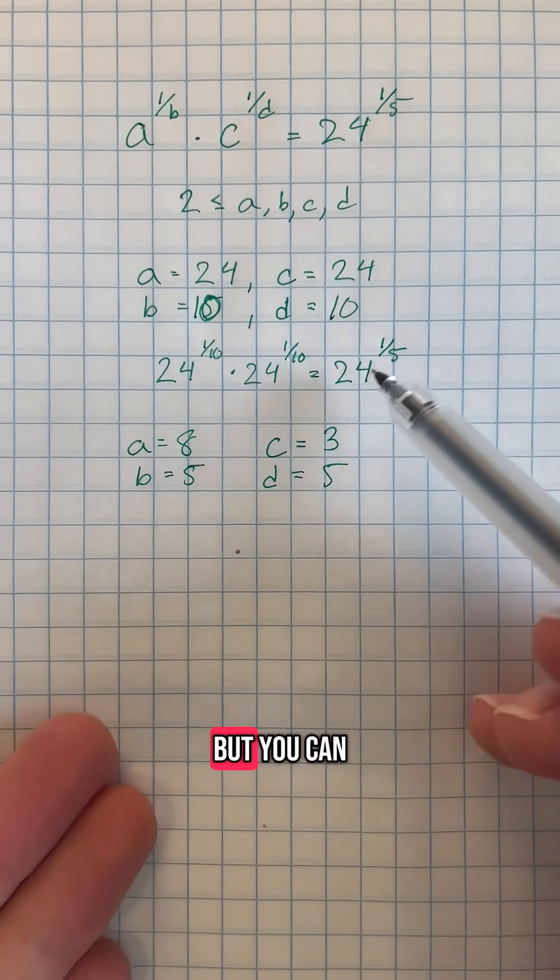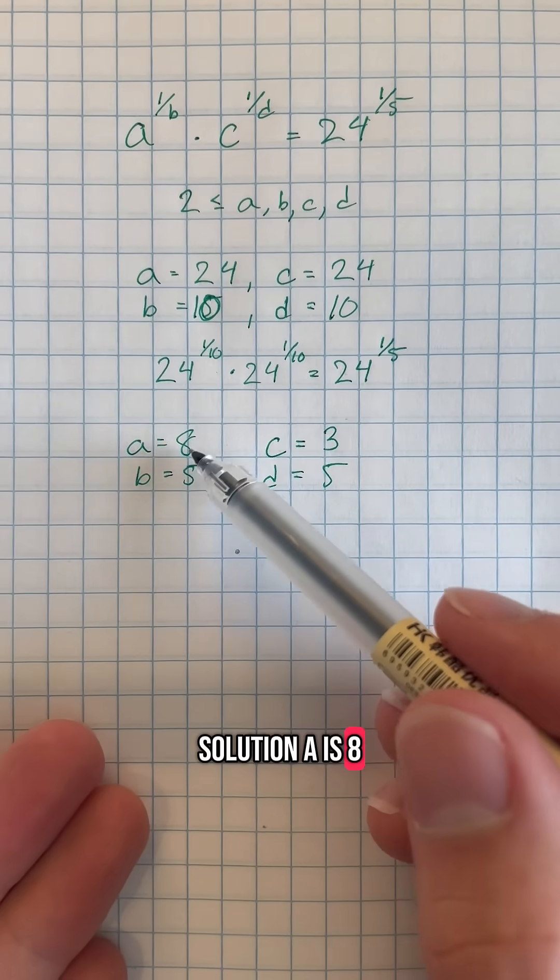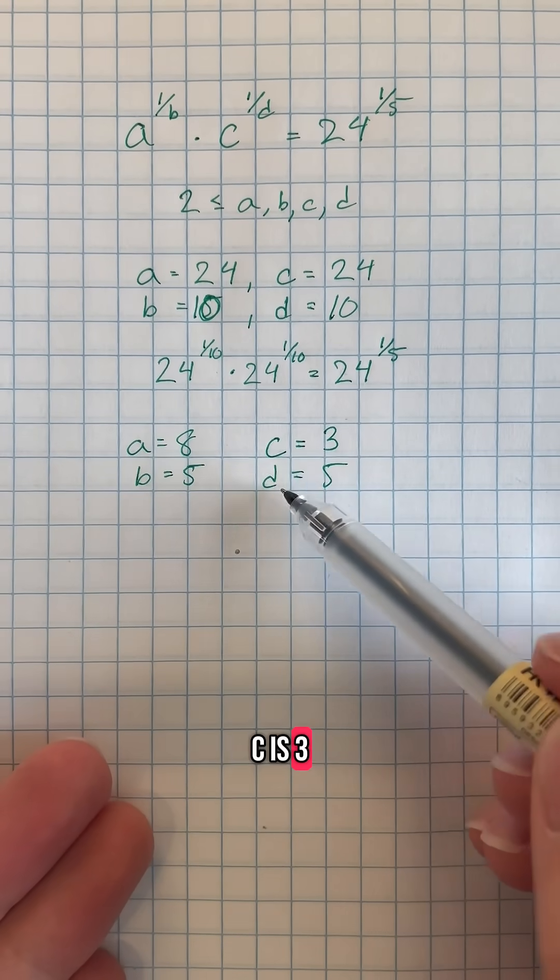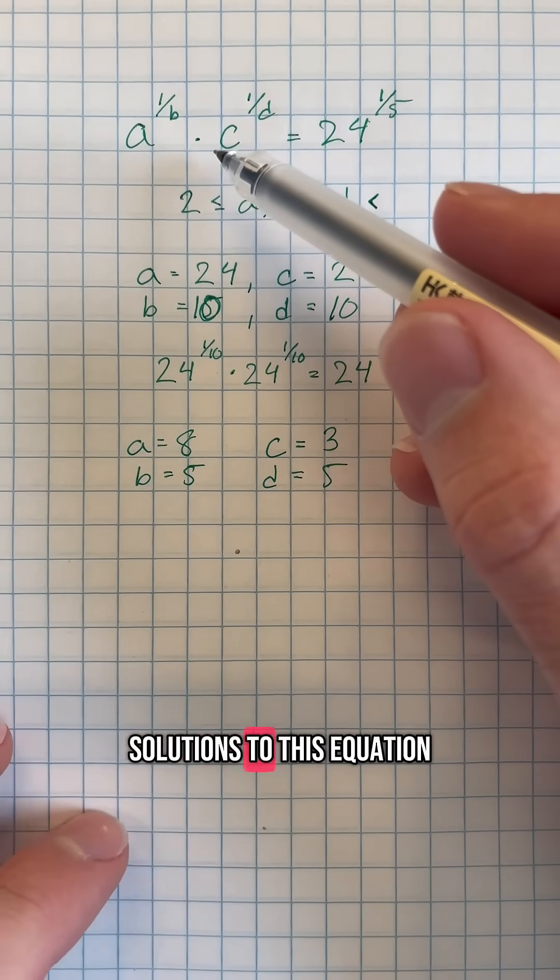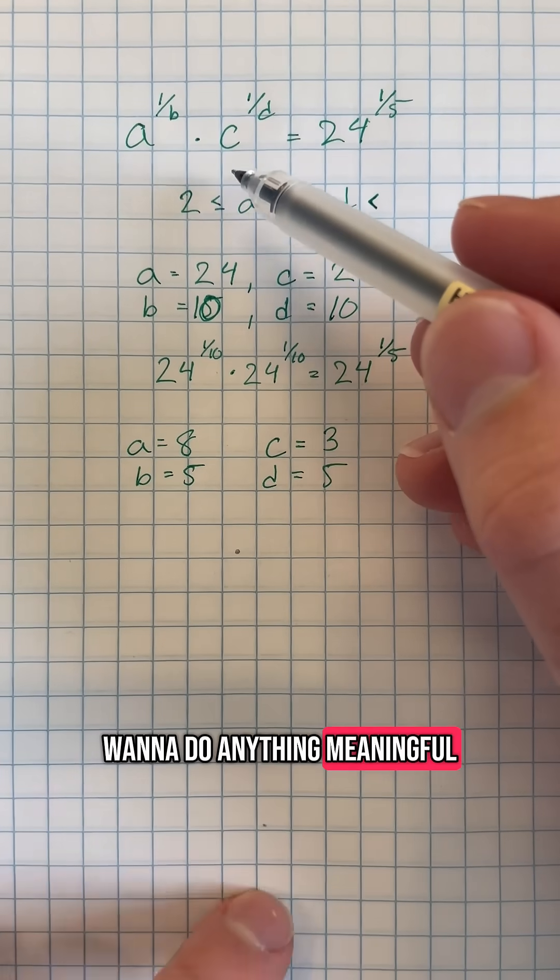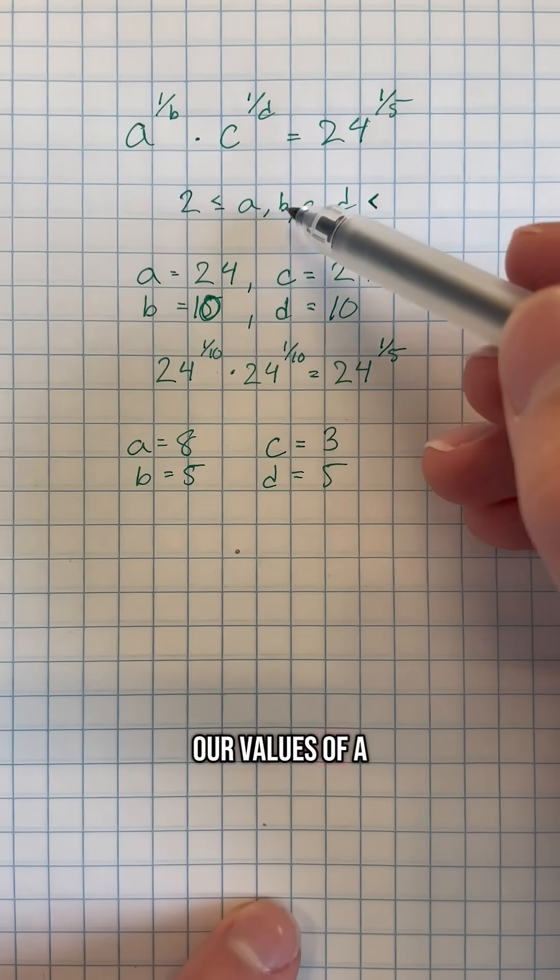But you could also have the solution a is 8, b is 5, c is 3, and d is 5, and that would also work. And in fact there are infinite solutions to this equation, so if we want to do anything meaningful we're going to have to restrict our values of a, b, c, and d.